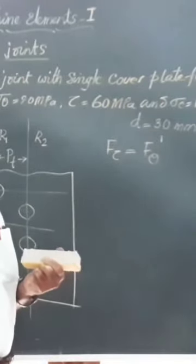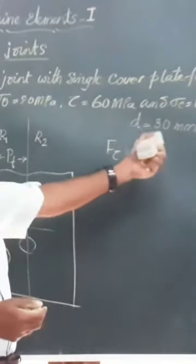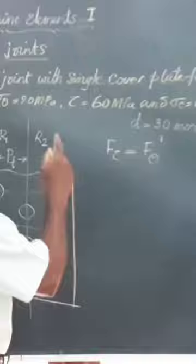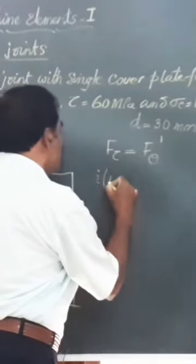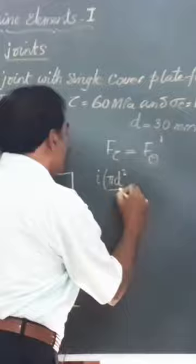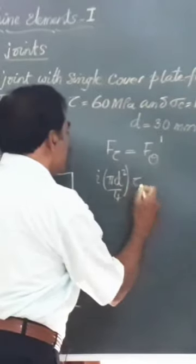And if you know the shear strength of the rivet that is given in the question tau, you will be able to find out this. So friends, I write down this as π d square by 4 multiplied by tau